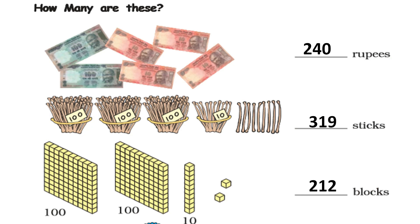Count and write: How many 100s are there? 2. How many tens? 4. So the total is 240 rubies. How many bundles of hundreds? 3 bundles of 100, 1 bundle of 10, and 9 loose sticks — totalling 319 sticks.